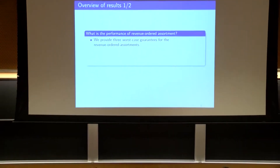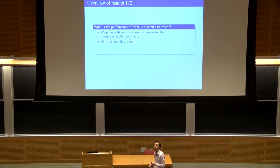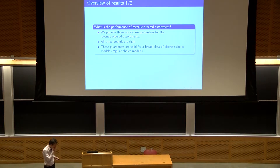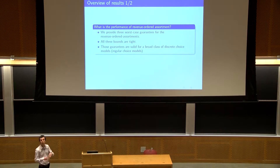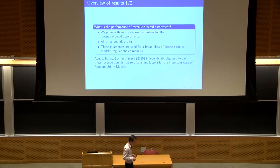We have three worst-case performance bounds, and we show that these bounds are tight for general discrete choice models. These bounds hold for a class of choice models that includes the random utility model as a special case, so they are even more general than random utility. I want to mention that Awad, Farias, Levy, and Segev independently obtained two of these three bounds for the case of random utility models.